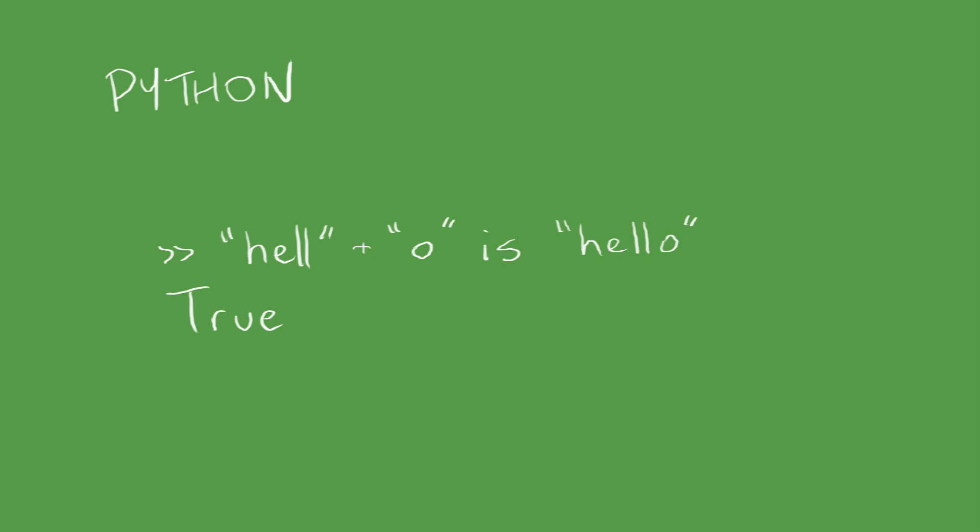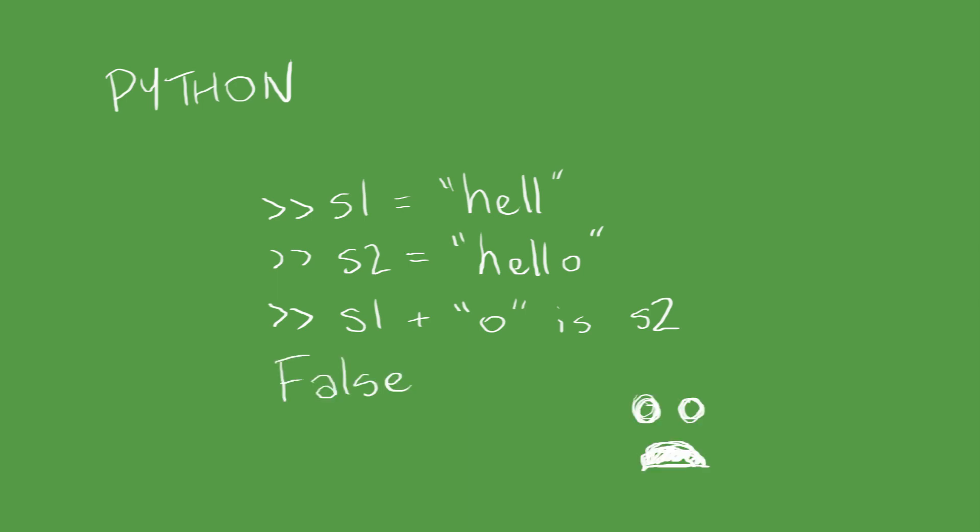If we assign S1 to be equal to hell and S2 to be equal to hello, then S1 plus O is S2. That should be true, right? Well, actually it's false.